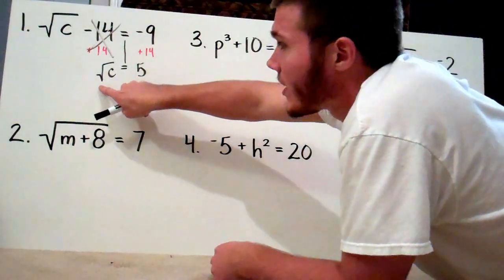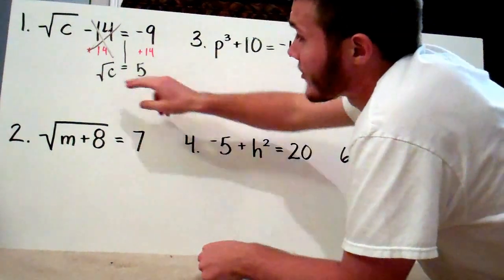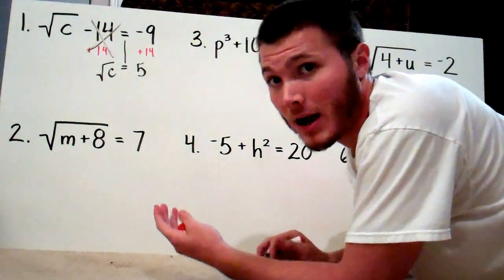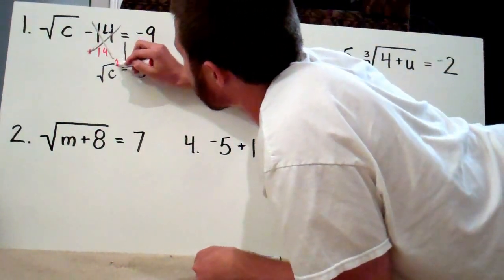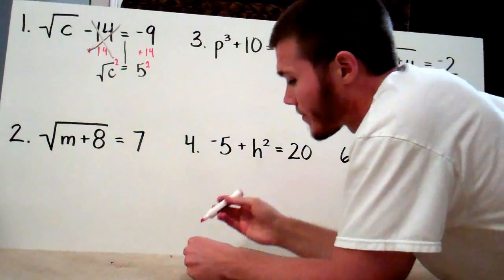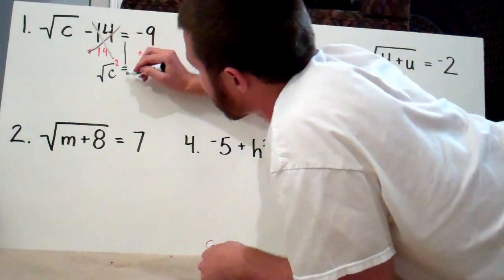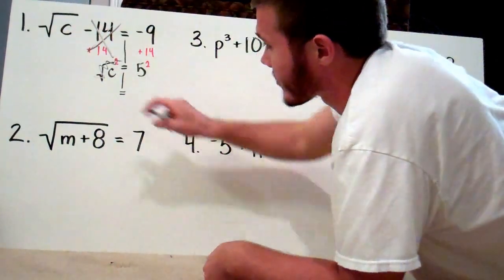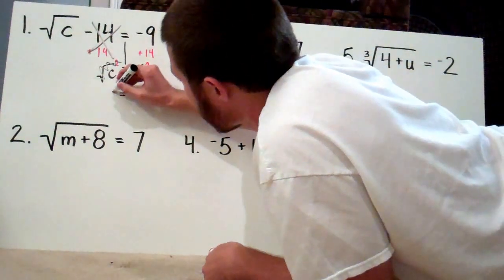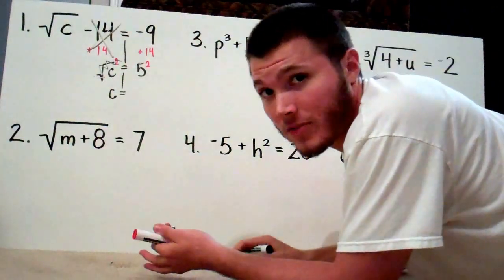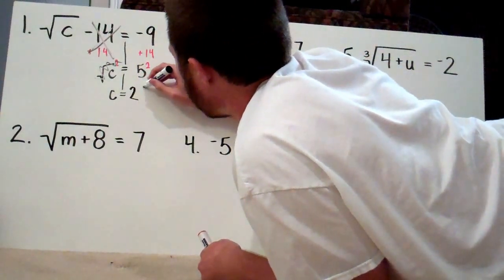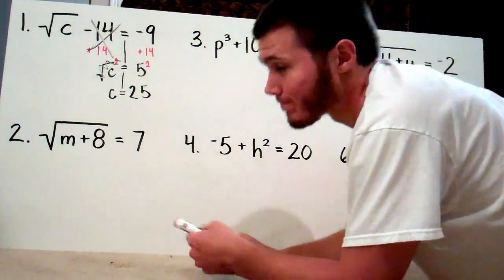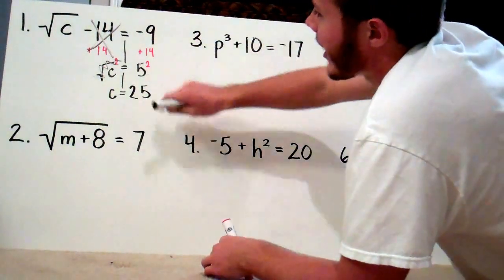The last step: I want to get rid of that square root. So I have to use the inverse of a square root, which is squaring a number. I'm going to put both sides to the second power. That completely gets rid of the square root symbol — these cancel out, so I have nothing left but C. And 5 squared is 5 times 5, which is 25. I know you can probably figure this out in your head, but I want you to show your work and use this method.